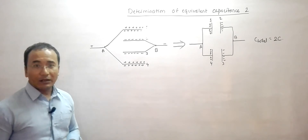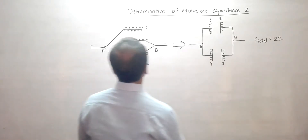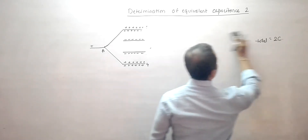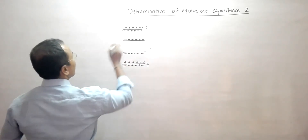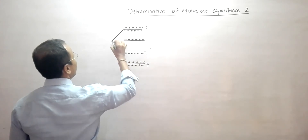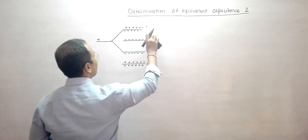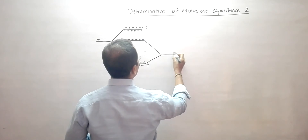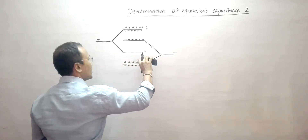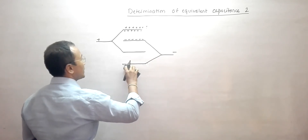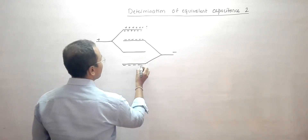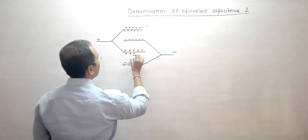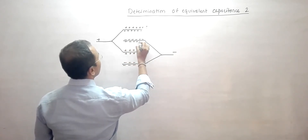Now if the arrangement is somewhat different — if we connect plate 1 and plate 3 to something positive, and plate 2 and plate 4 to something negative, the whole system will look different. Plate 1 will be minus, the next will be plus, then minus, then plus and so on — alternating charges across all 4 plates.